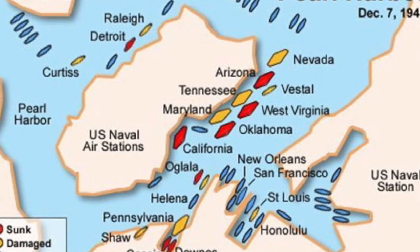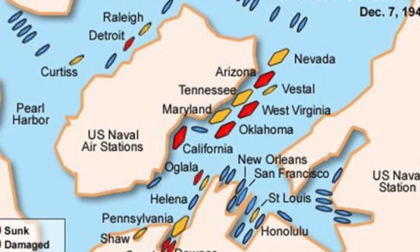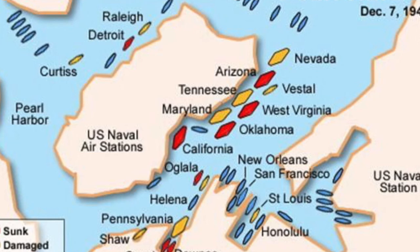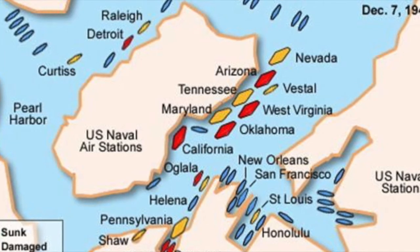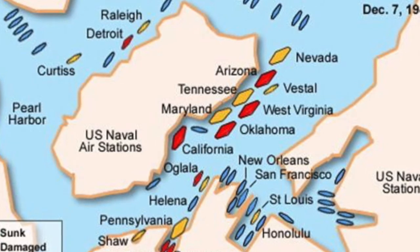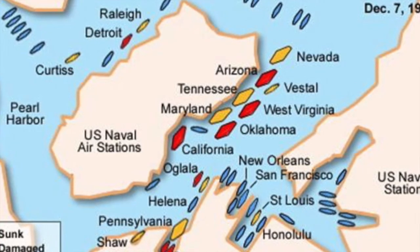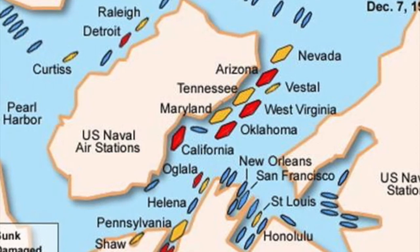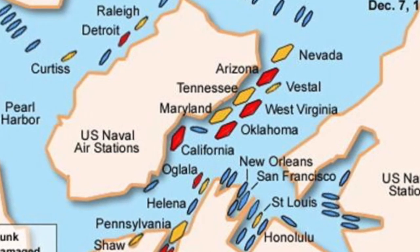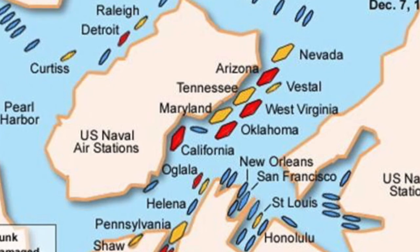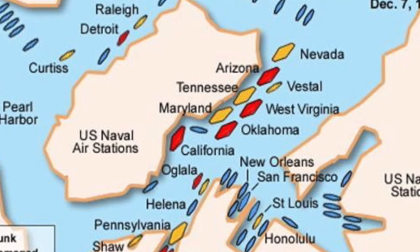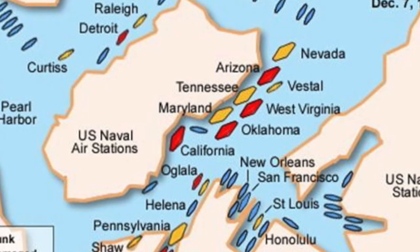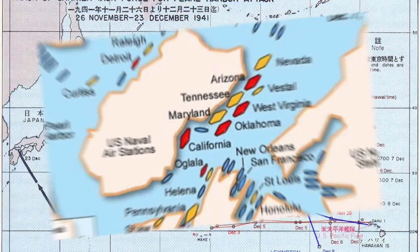Japan's plan was simple: destroy the entire Pacific fleet. By doing that, the US would be unable to fight back, and then Japan's armed forces would spread right across Europe's South Pacific colonies — Indochina, the Dutch East Indies, Malaya, Singapore, etc. That was Japan's plan. After months of tactical planning, Japan launched their attack.